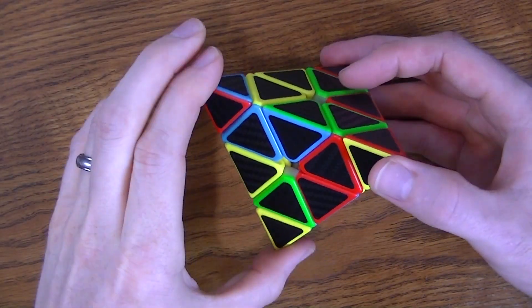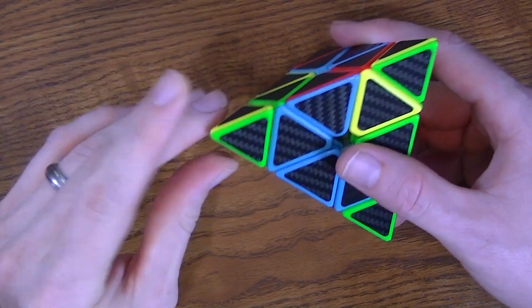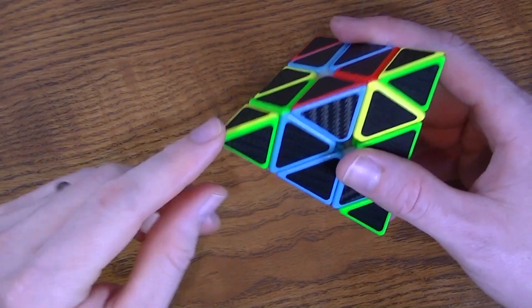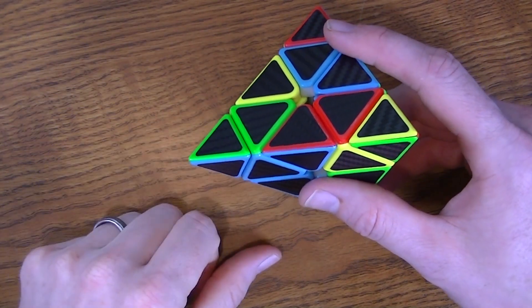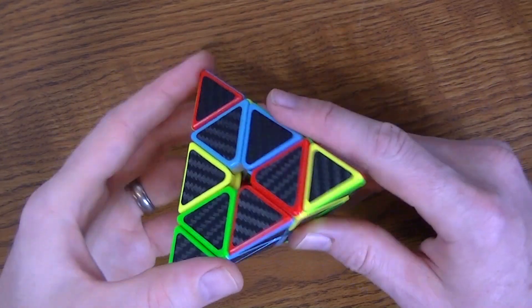Step one for solving the Pyramix puzzle is to turn the tips or the corners here, the peaks, the pointy sections, turn them around so that they match up with the color directly beneath them or with the piece directly beneath them.